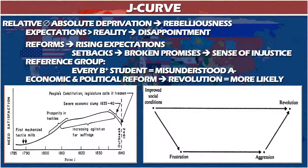Another way to look at this is in terms of reference groups. Every B-plus student is a misunderstood A-minus: the students who complain most about grades are not those doing worst. This might explain why people who rebel are usually the group just below the ruling class — they say there's really no difference between us and the ruling class, so why shouldn't we be the rulers? Economic and political reform efforts by the government to make things better might actually accelerate a revolution by getting people's hopes up and bringing new groups into the system.